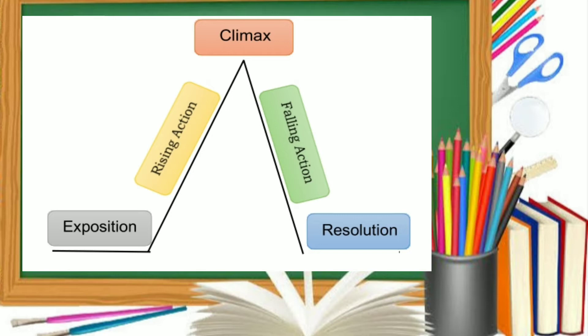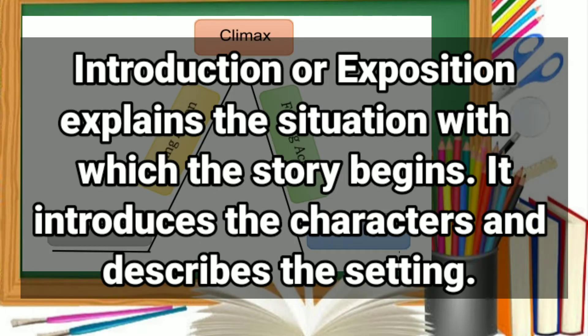Let's take a look at the plot diagram, which shows how the main events in the play are organized. The plot diagram can be divided into different stages. First, we have the introduction or the exposition, which explains the situation with which the story begins. It introduces the characters and describes the setting, providing the background information needed to understand the story properly.